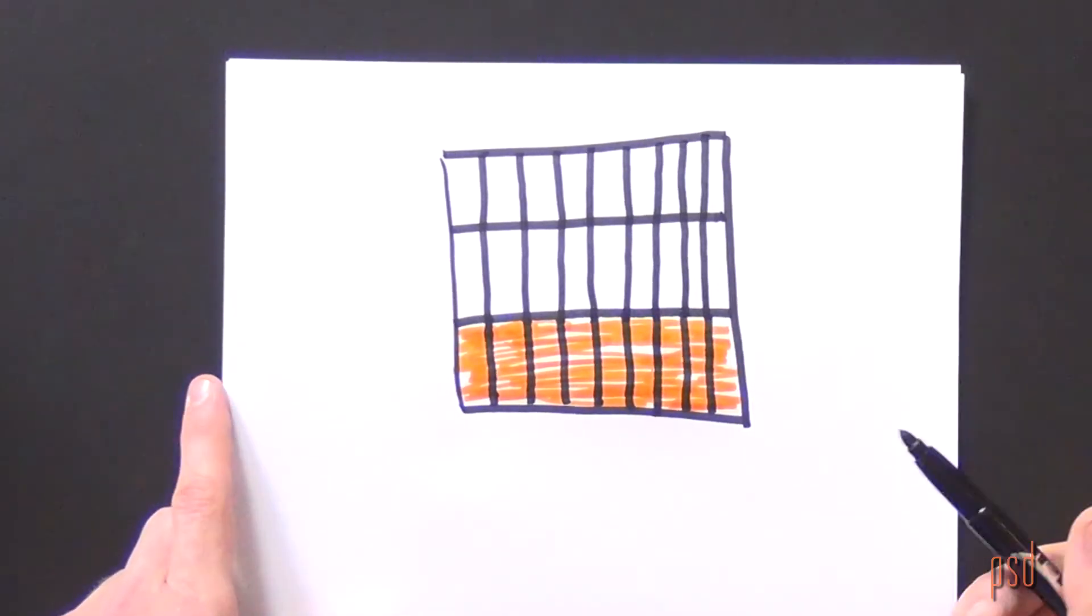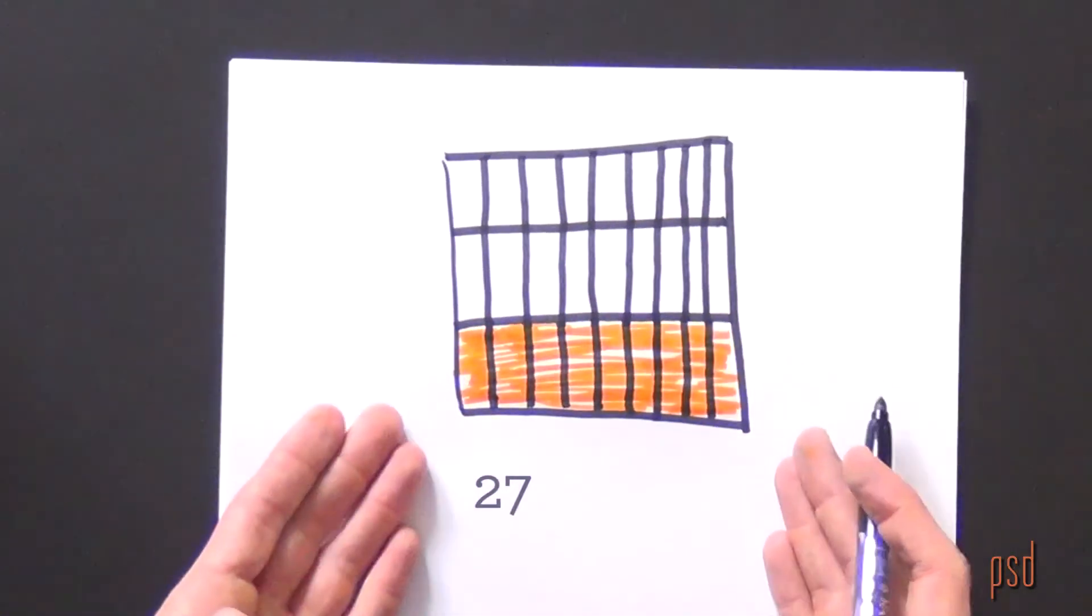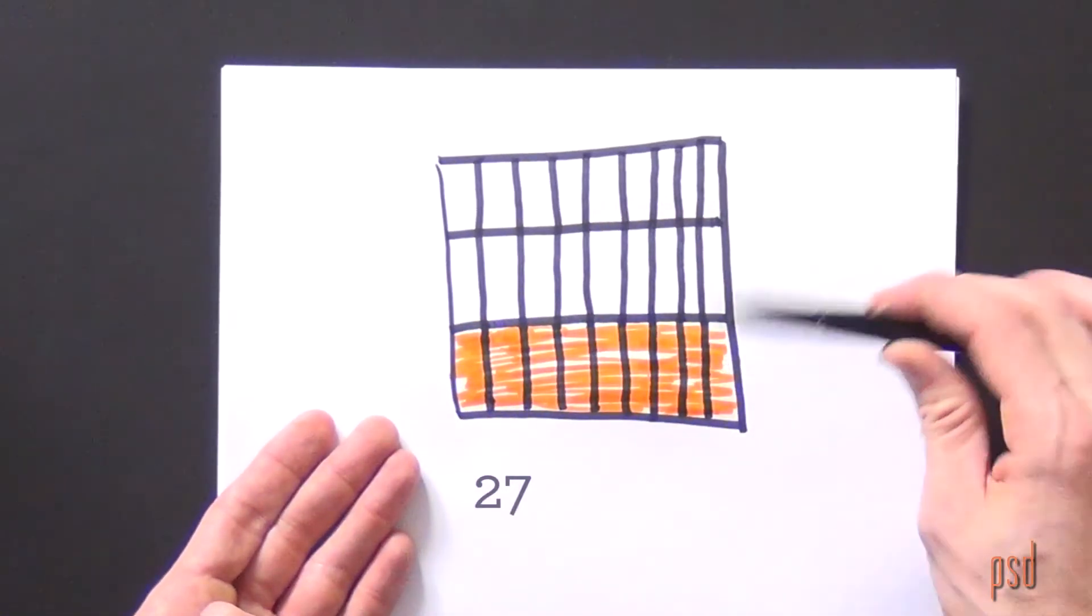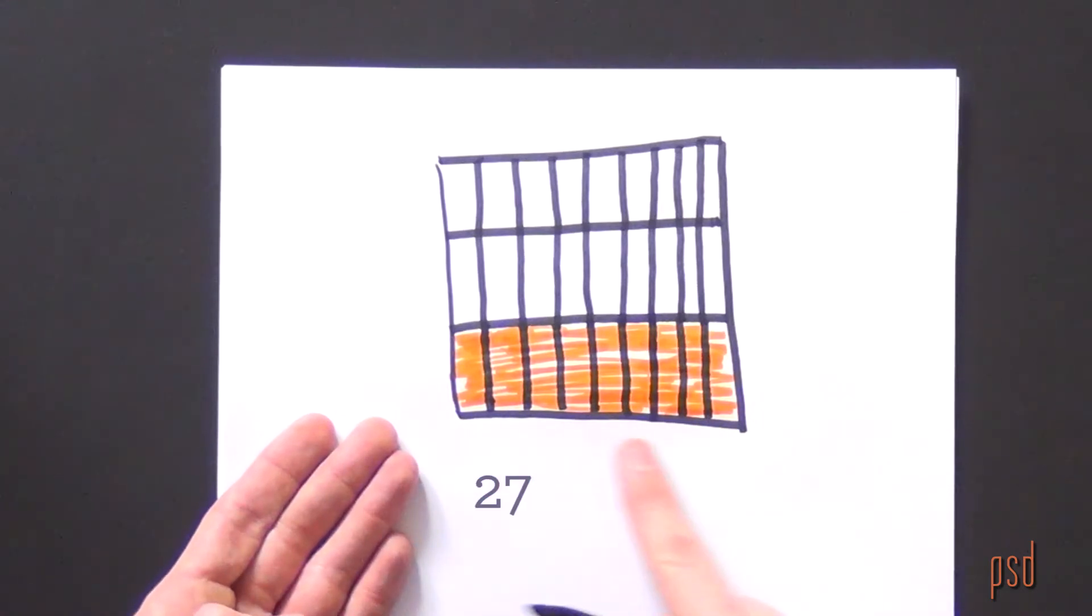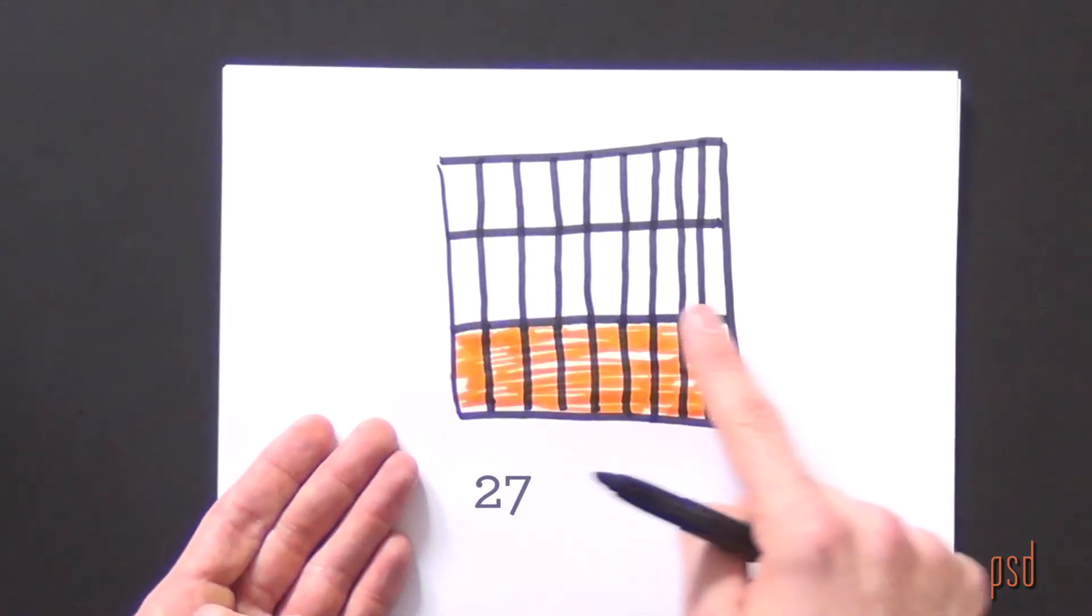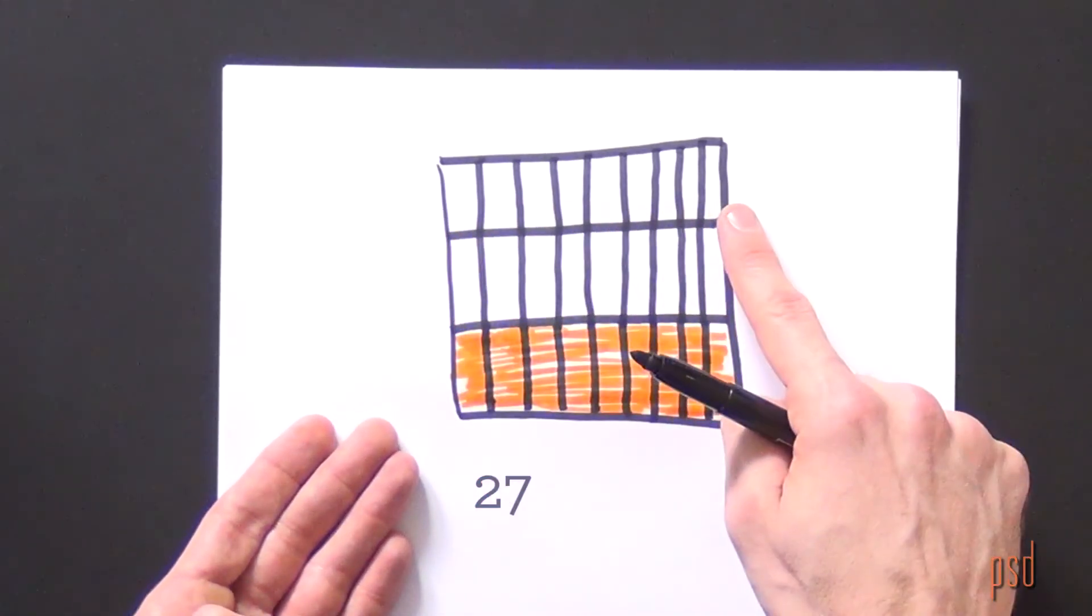By doing so, I've now created 27 equal parts. Here's one-third, there's nine parts in that one-third, there's nine parts in this third, there's nine parts in this third.